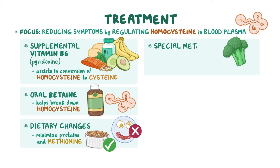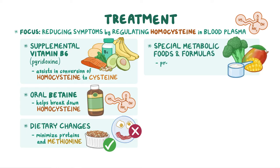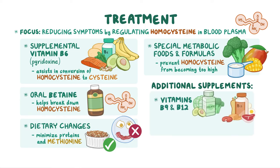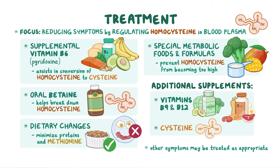Special metabolic foods and formulas may be required to prevent homocysteine levels from becoming too high, since many foods have methionine and protein. Additional supplements may be recommended, including vitamins B9 and B12, and less commonly, cysteine. Other symptoms may be treated as appropriate.